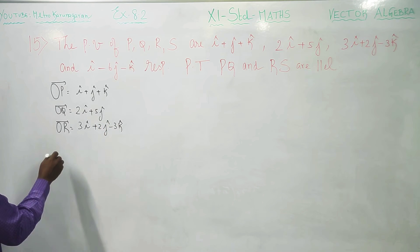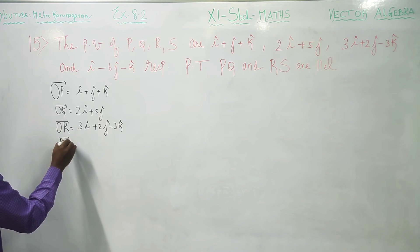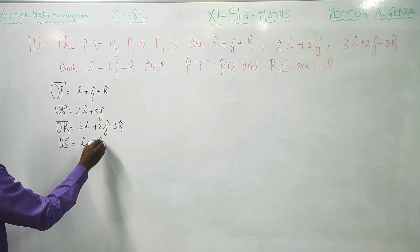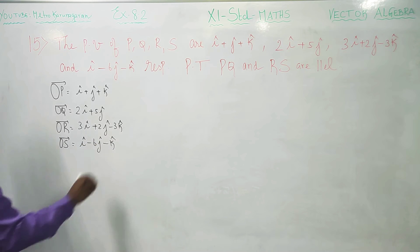After this, finally, OS, OS vector, I vector minus 6J minus K.